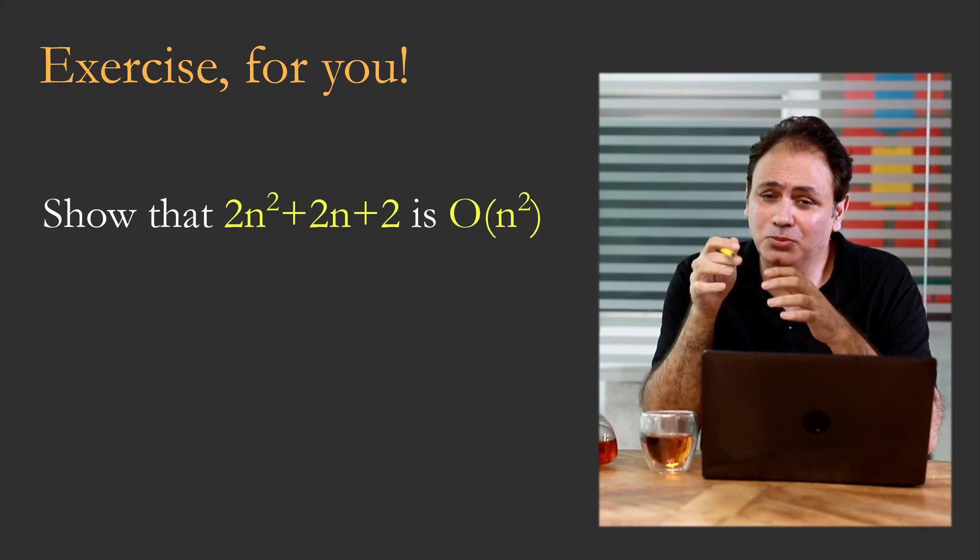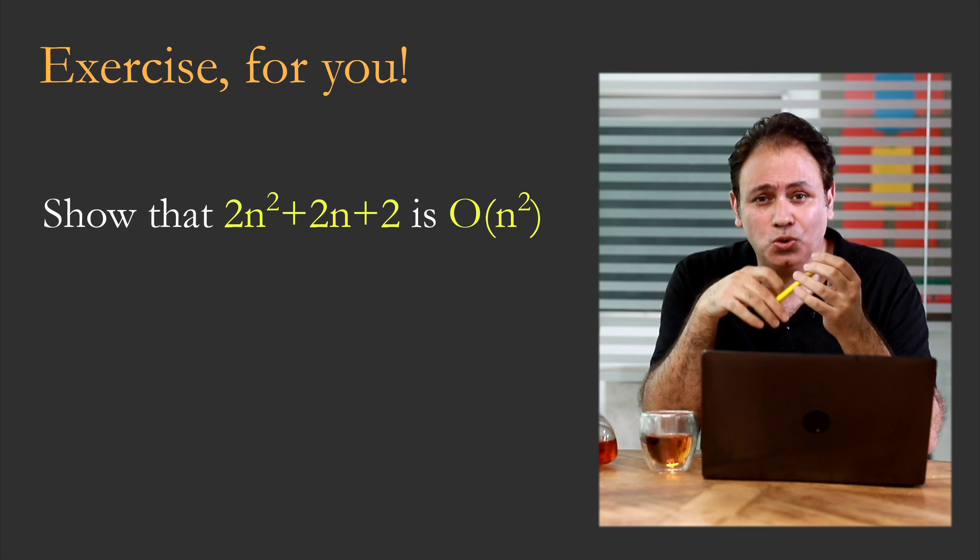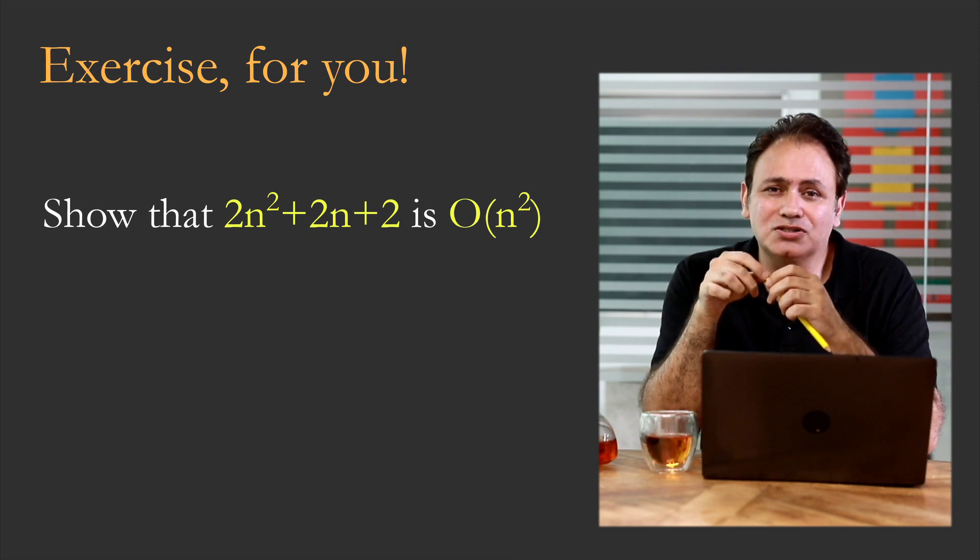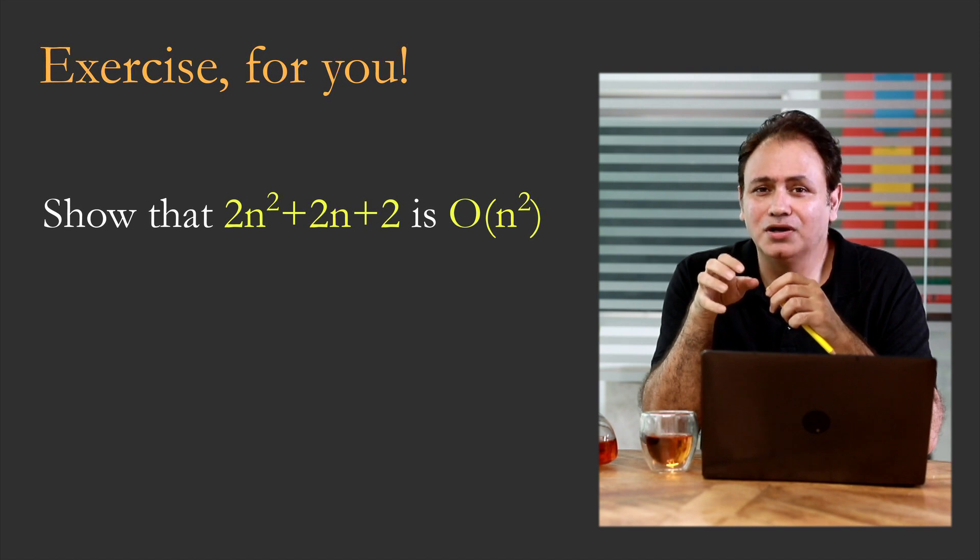And so what I'm going to do is leave you with an exercise. In a similar way that we did the example, can you actually show that 2n²+2n+2 is O(n²)?